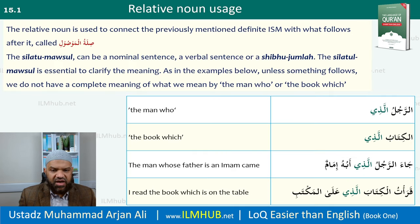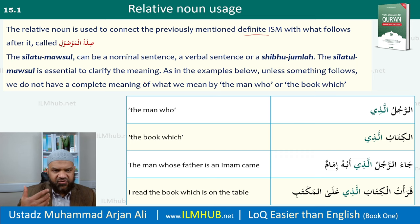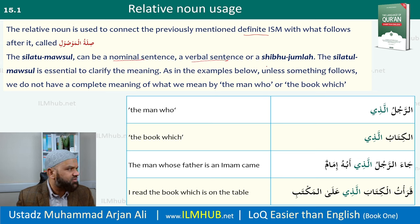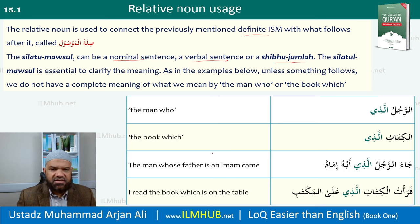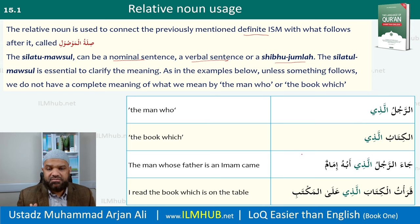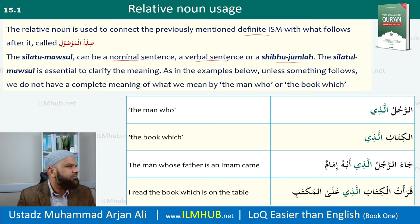The relative noun is used to connect a previously mentioned definite ism with that which follows. In Arabic, what follows is called silatul mawsool. The silatul mawsool can be a sentence — nominal or verbal — or it can be shibhu jumla, such as mudaf mudaf ilayhi where the mudaf is an adverb, or jar majroor. The silatul mawsool is essential to clarify the meaning. For example, if I say 'arrajulu alladhi' — the man who — I'm not clarifying anything. Something must come after to complete the meaning.